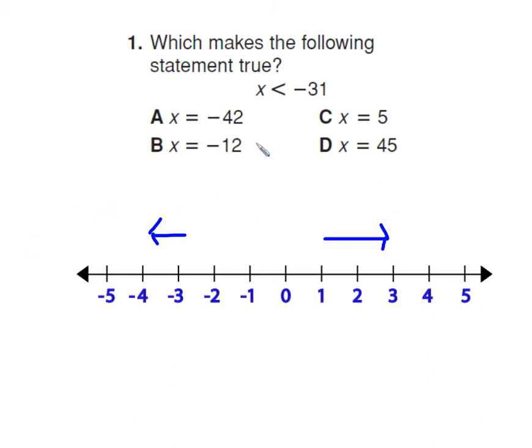So in this case, negative 42 is further to the left of negative 31, so it's less than negative 31. In terms of absolute values, 5 and 12 are less than 31 if they were both positive. But this is negative 31, so negative 42 is actually less than negative 31. So there'll be a problem like this on the test.